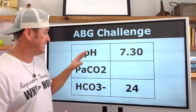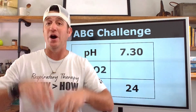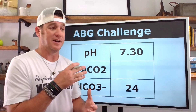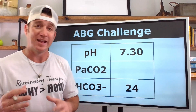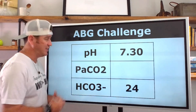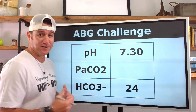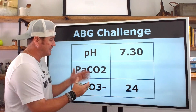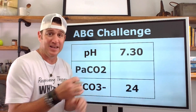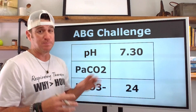If you want to try these yourself, pause the video every time I bring a new one up — that'll give you a chance to work through it before I explain. So, pausing now. When you come back: we have a pH of 7.30, which is an acidosis, so we know this blood gas is going to interpret as some type of acidosis.